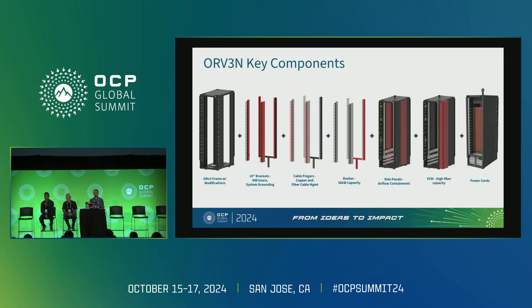Here are the key components of the ORV3N rack, starting from left to right. We basically took the base wall mount and bolted on four 21-inch to 19-inch adaptive brackets. On top of that, we added one OU pitch cable fingers for maintaining fibers and copper cables. In the rear, we added a 48-volt DC offset bus bar to address some of the serviceability concerns. We added side panels for air flow containment. For certain deployments, we introduced an accessory kit called the VCM — vertical cable managers — to support higher fiber capacities. And we developed custom power cords for each network gear.